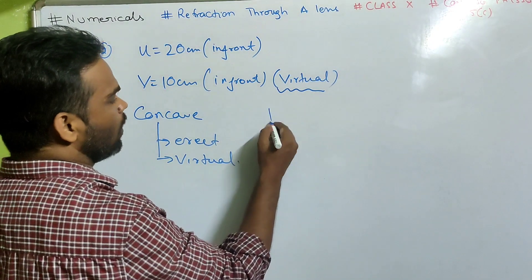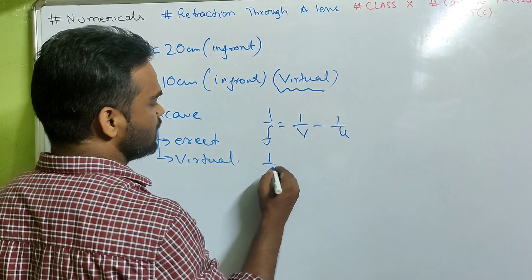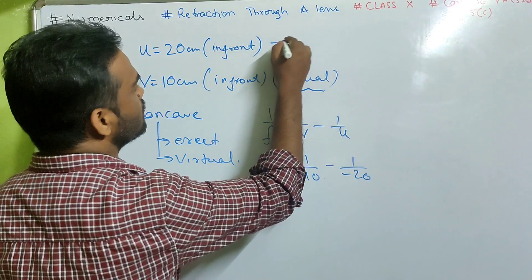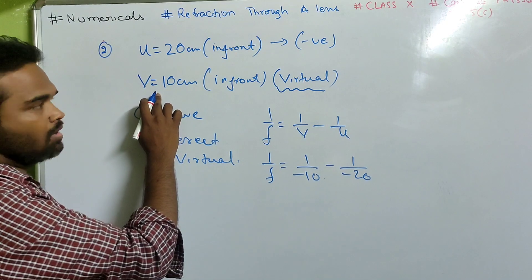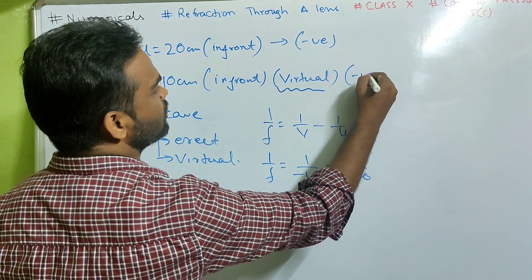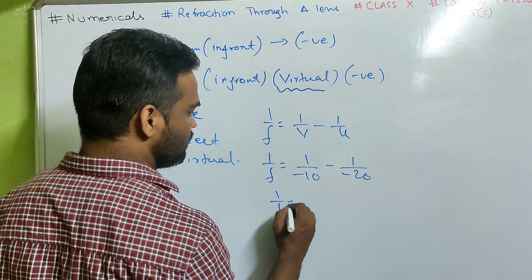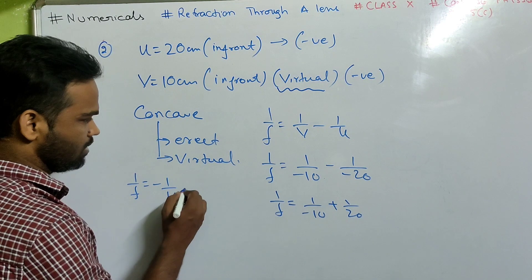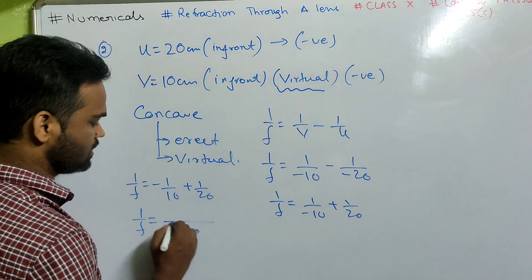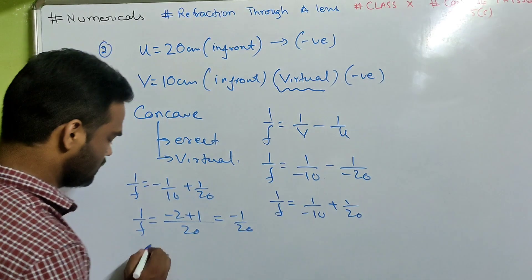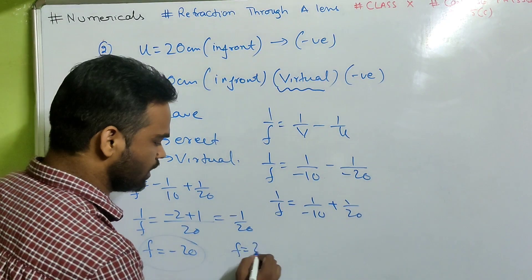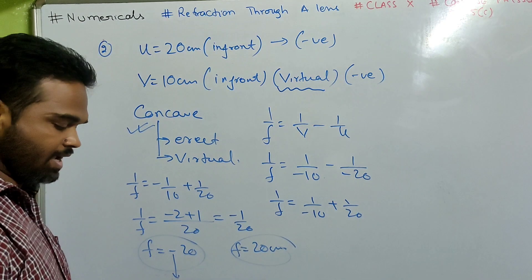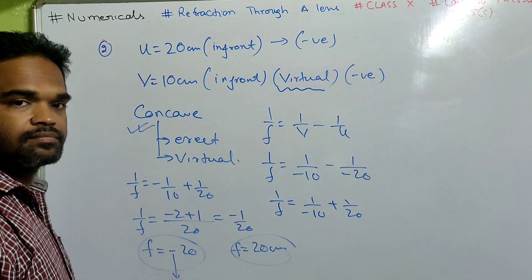Find the focal length: 1/F = 1/V minus 1/U. V is minus 10 (virtual image, negative), U is minus 20 (always negative). So 1/F = 1/(minus 10) minus 1/(minus 20) = minus 1/10 plus 1/20. Taking LCM 20: minus 2 plus 1 = minus 1/20. Therefore F equals minus 20 cm. The negative sign confirms it is a concave lens. Focal length is 20 cm (negative).